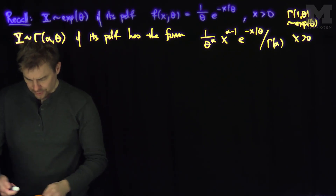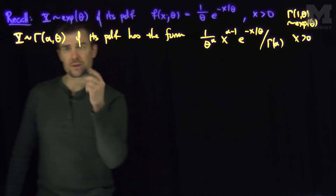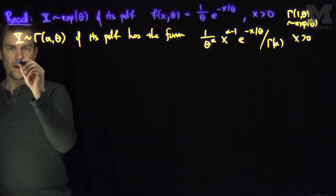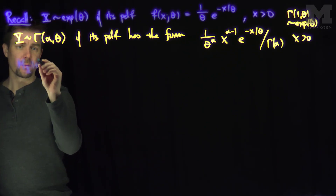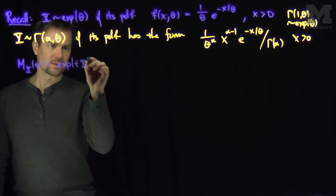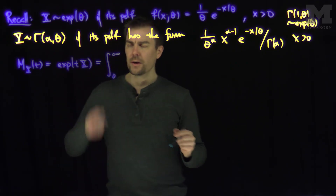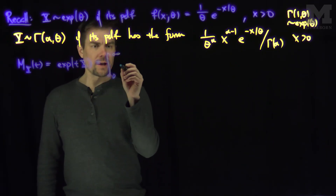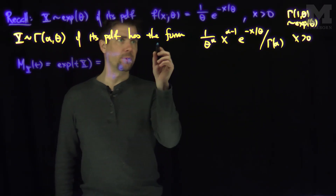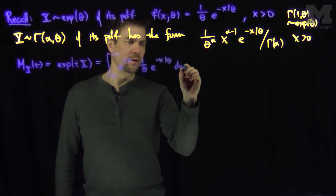Now I'd like to show the sum of n independent exponential distributions adds up to a gamma distribution. Recall the MGF m_X(t) — the moment generating function — for an exponentially distributed X. It's the integral from zero to infinity of e^(tx) times the PDF, which is (1/θ) e^(−x/θ) dx.